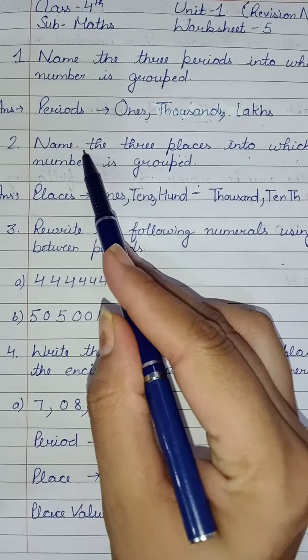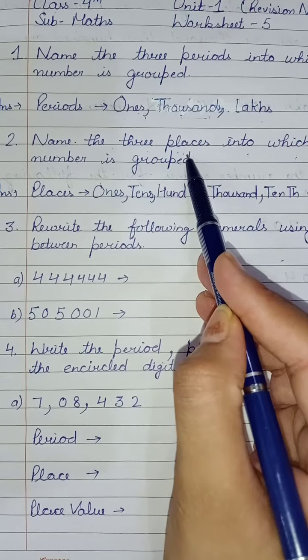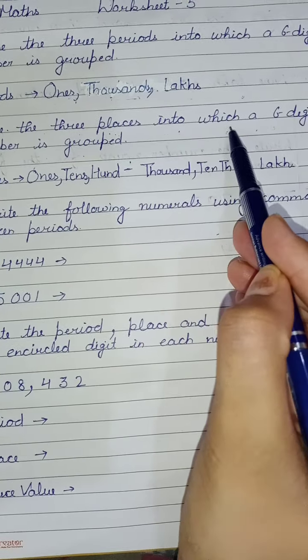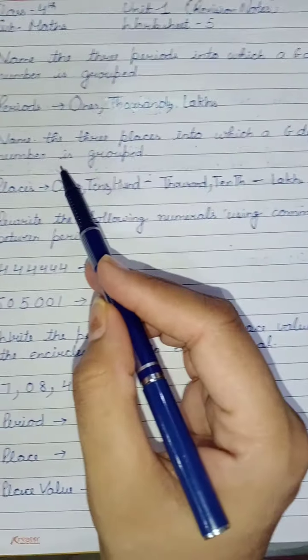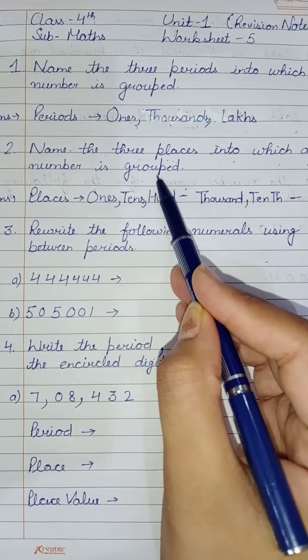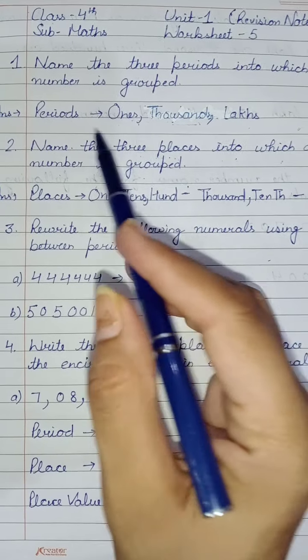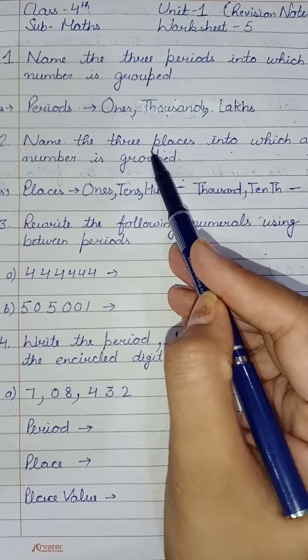Next question is: Name the three places into which a six digit number is grouped. You have to tell places. First we have to tell periods, then places.